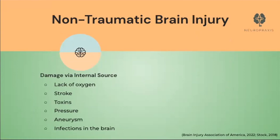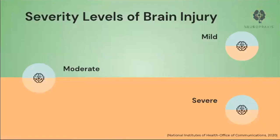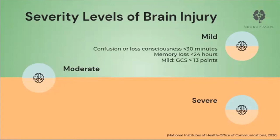Here is an image of what a non-traumatic brain injury may entail. There are three levels of brain injury diagnosed by how long one loses consciousness and how long symptoms occur post-injury. Mild severity is the most common diagnosis of brain injury and is usually caused by concussions. It is characterized by confusion and loss of consciousness for less than 30 minutes with post-traumatic amnesia lasting up to 24 hours. Mild TBI falls within 13 points or more on the Glasgow Coma Scale.